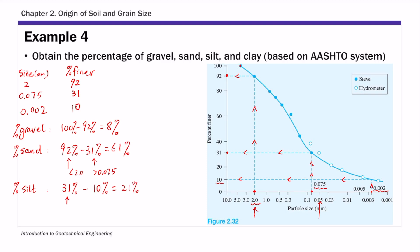So again this is the percentage smaller than 0.075 and larger than 0.002. And finally is the percent of clay which is anything smaller than 0.002. This percentage you can read directly from the curve, so percent of clay is 10 percent. Okay, so that's the example for obtaining all these different percentages of different types of soil given a particle size distribution curve using the AASHTO system.